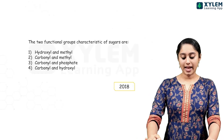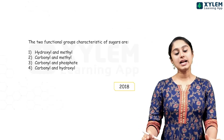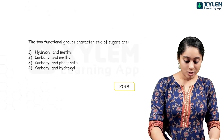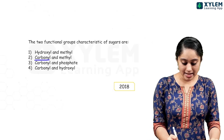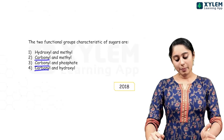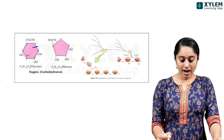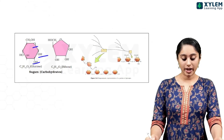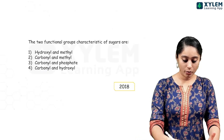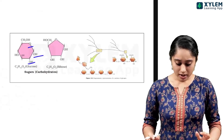From 2018, two functional groups characteristic for sugars — sugars have a carbonyl group and also hydroxyl groups. There is no free methyl group or free phosphate group. So option 4 — carbonyl and hydroxyl groups — are characteristic for sugars.